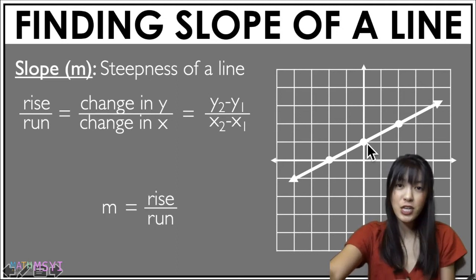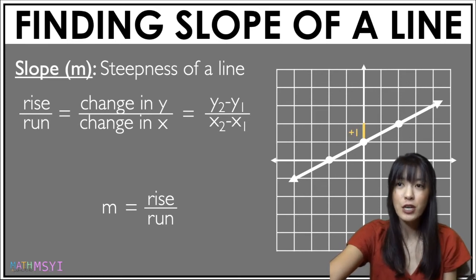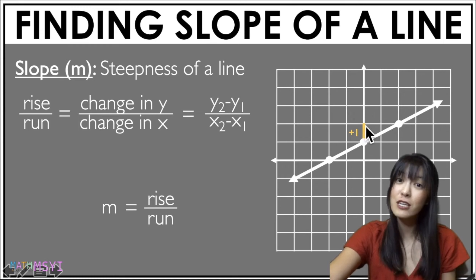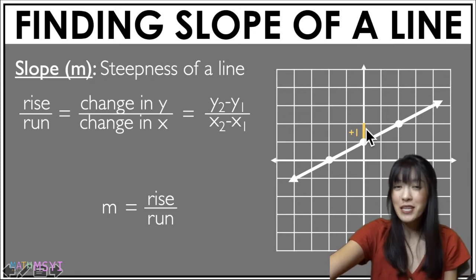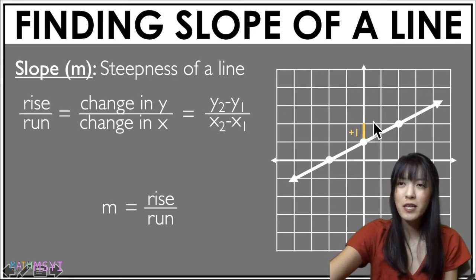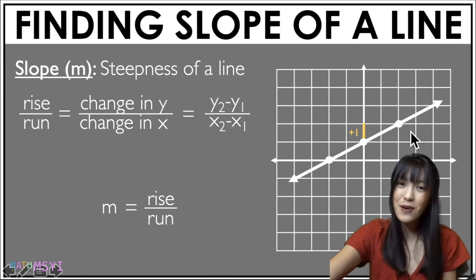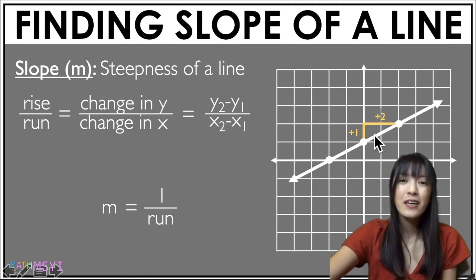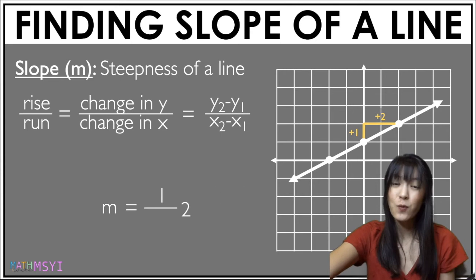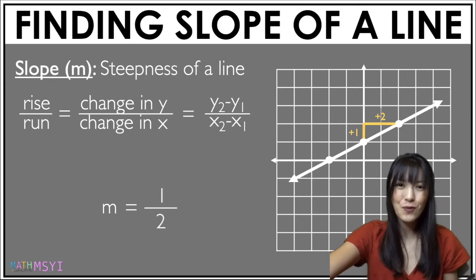The rise is the vertical change from point to point, so I am looking at my vertical change right here. From that first point going to the second point my vertical change is positive one. Now I'm going to find my run — my run is my change in x from my first point to my second point, and that is a change of two. So my run is two. Rise over run is one over two, so my slope is one half.